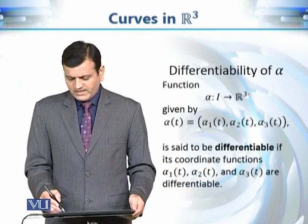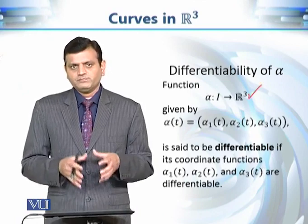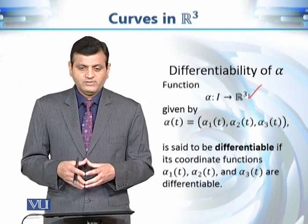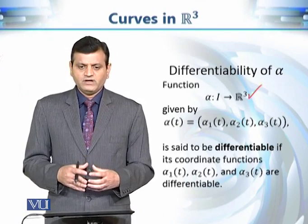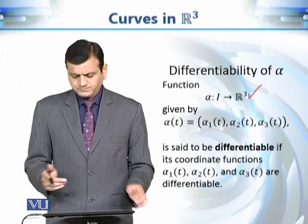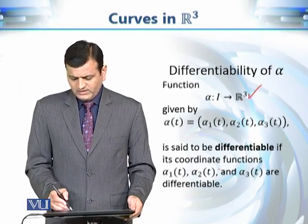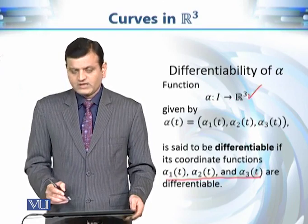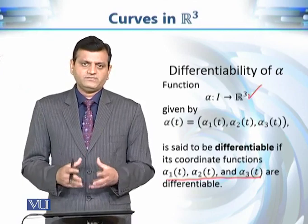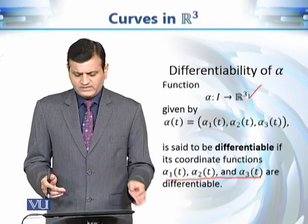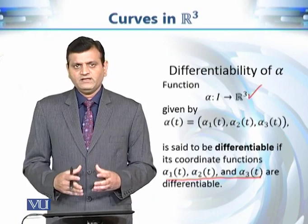Now, when do we say that this function alpha is differentiable? That is what we want to impose on our definition of curve, because we want the differentiability property in order to further study its properties. The function alpha from I to R³ is differentiable if its coordinate functions alpha₁(t), alpha₂(t), and alpha₃(t) are all differentiable. When all three of these functions are differentiable, we say that alpha is differentiable.